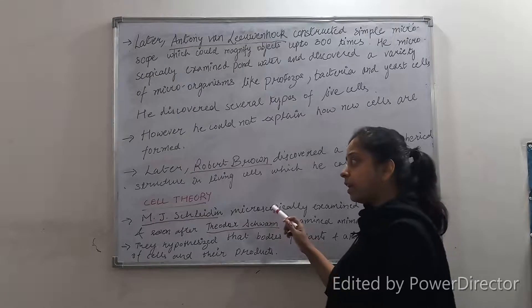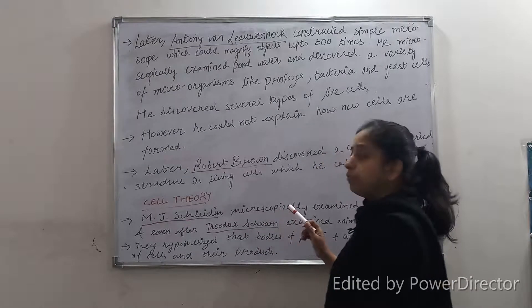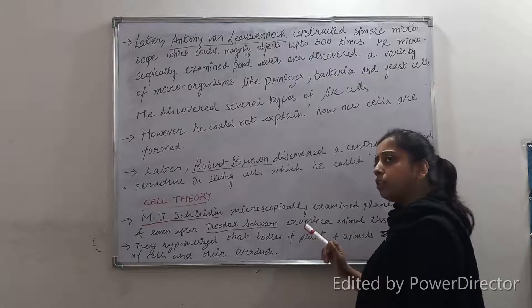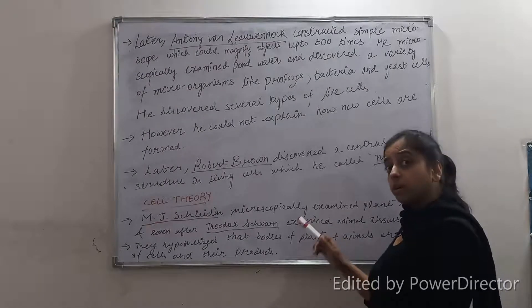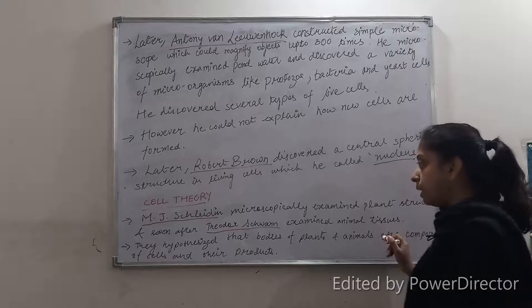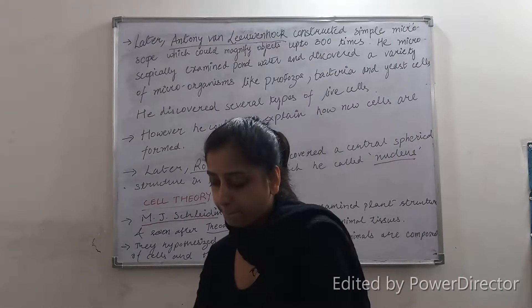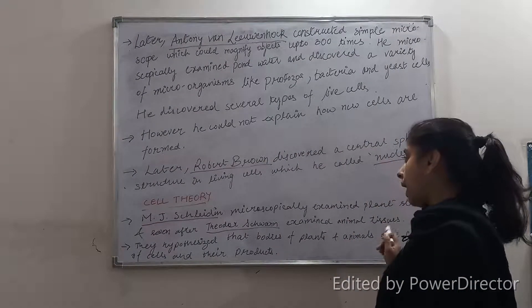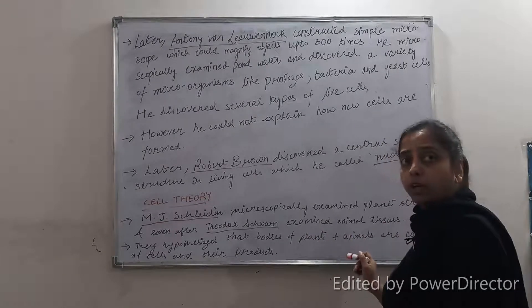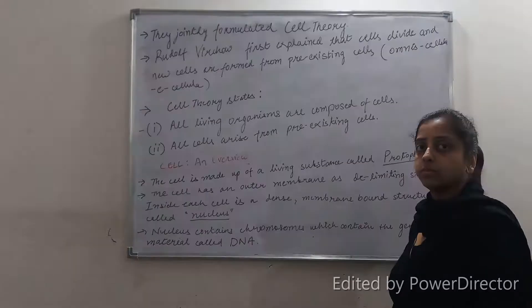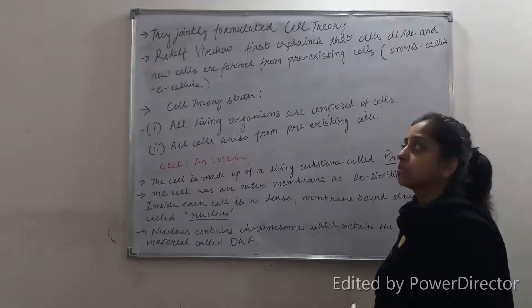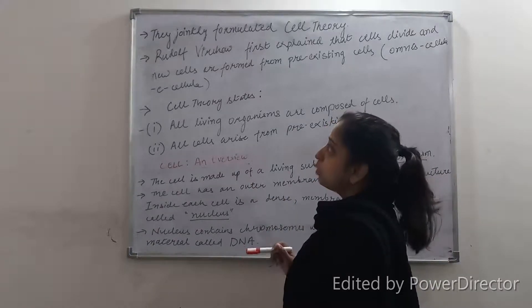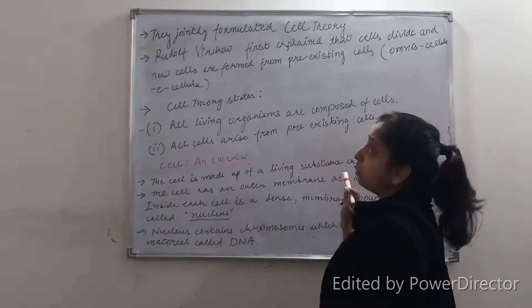Now we come to cell theory. This is very important. M.J. Schleiden, who was a German botanist, microscopically examined plant structure, and soon after, Theodor Schwann, a German zoologist, examined animal tissues. They both hypothesized that the bodies of plants and animals are composed of cells and their products. Schleiden and Schwann jointly formulated the cell theory.